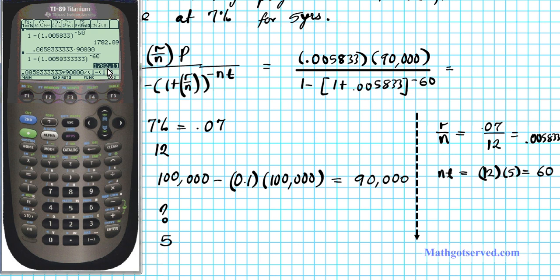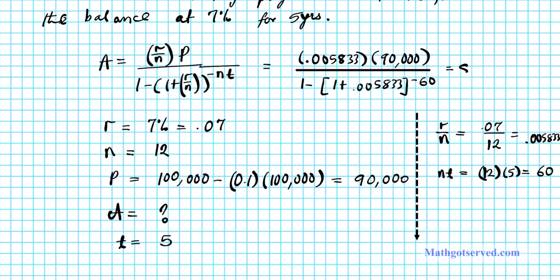All right, so I added more threes to the decimal expansion of 0.07 over 12, so you have all these threes there. So you see that we got 1782.11. The other result we got earlier was 1782.09. So this looks more accurate, 1782.11. All right, so let's go ahead and write that down. So we have the answer is 1782.11. So what does that mean? It means that the monthly payment for the car loan is going to be 1782.11.